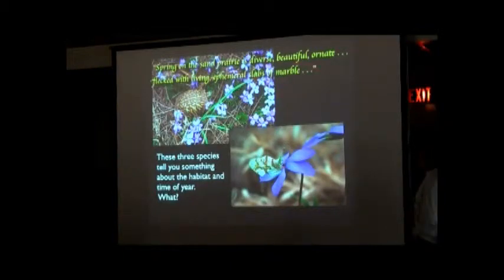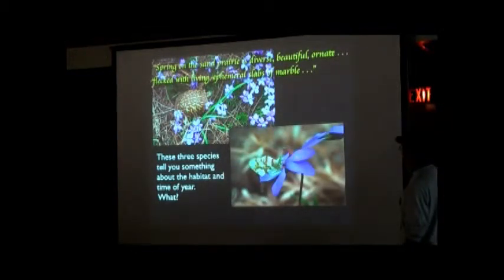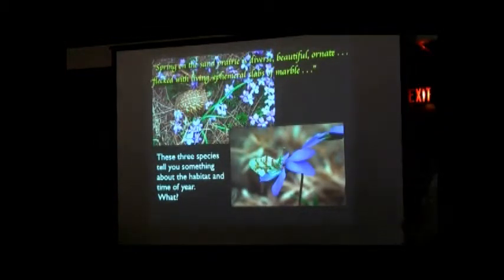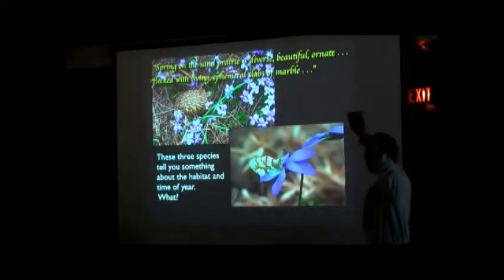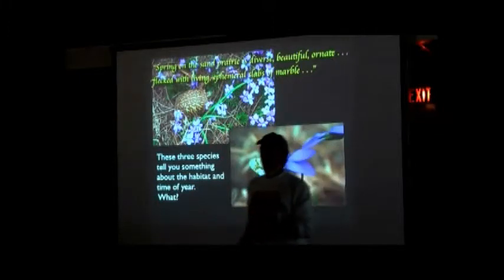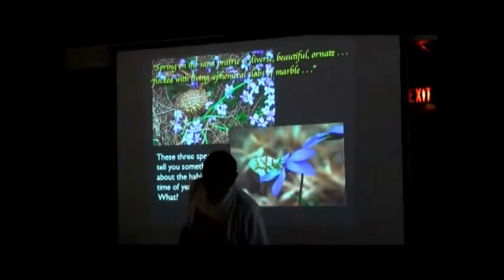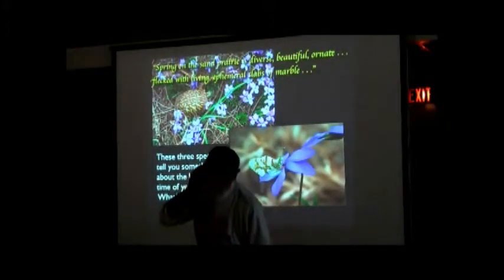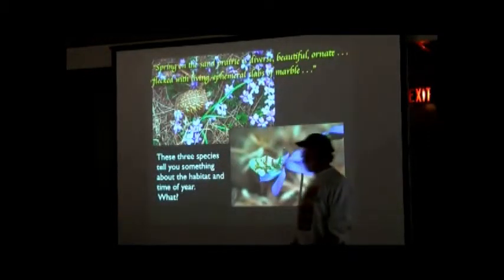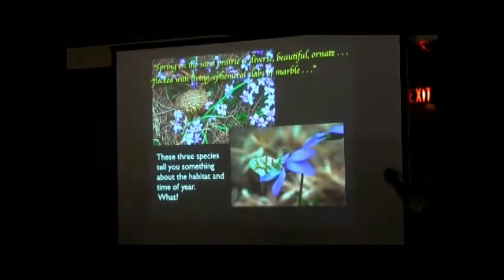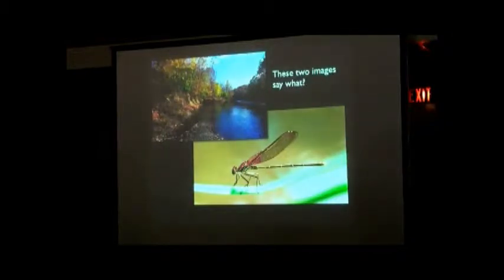So I wrote, spring on the sand prairie is diverse, beautiful, ornate. Get it? Ornate. Fleck with living, ephemeral slabs of marble. Okay? Be descriptive about something. Anybody else? Anybody have anything? Yeah? I got, look how lovely violets and lavender are loved by butterflies and turtles alike. Good. Still doesn't tell you what's going on, but it's descriptive. That's what we want. We want the beginning of description. Okay?